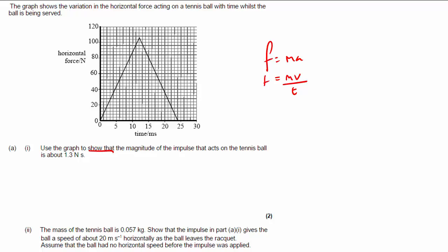If you multiply both sides by T, you get FT equals MV. This is why you can have the units of momentum being Newton seconds or kilogram meters per second. The FT bit is going to be equal to the impulse or the change of momentum.